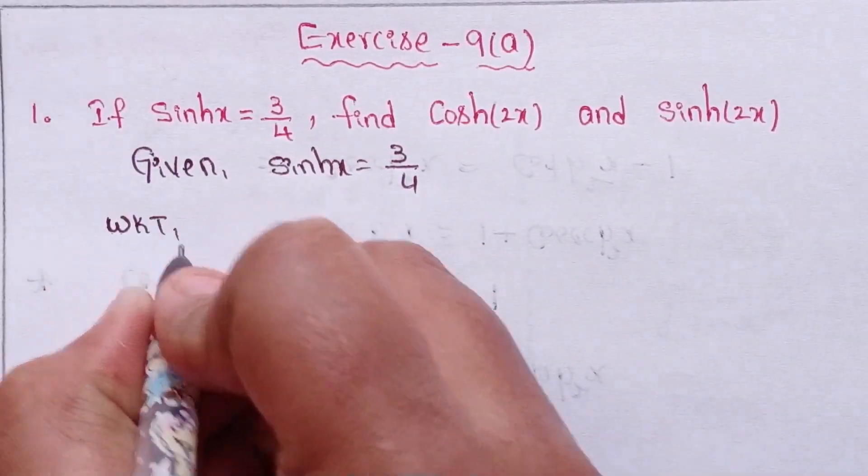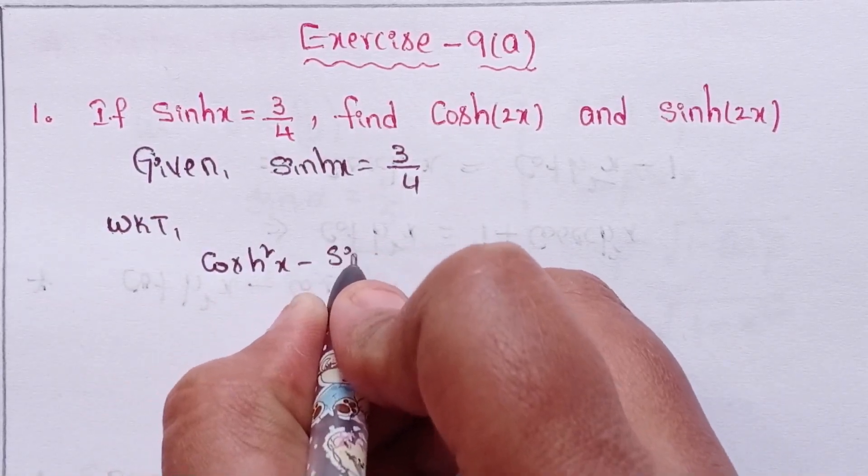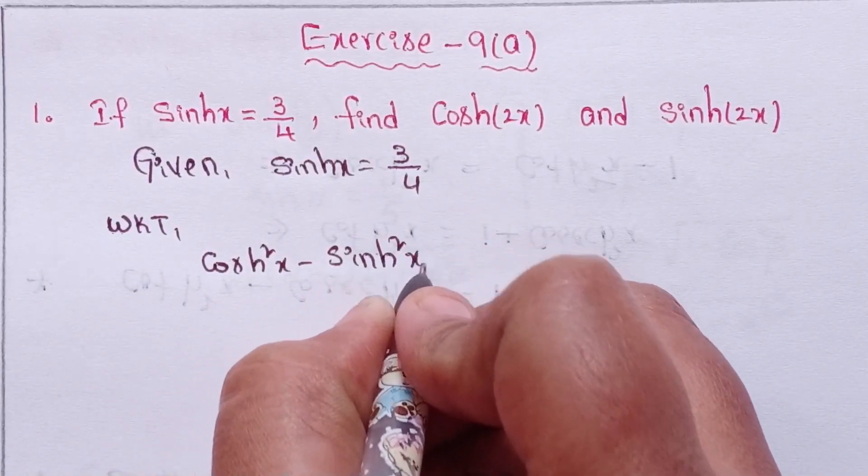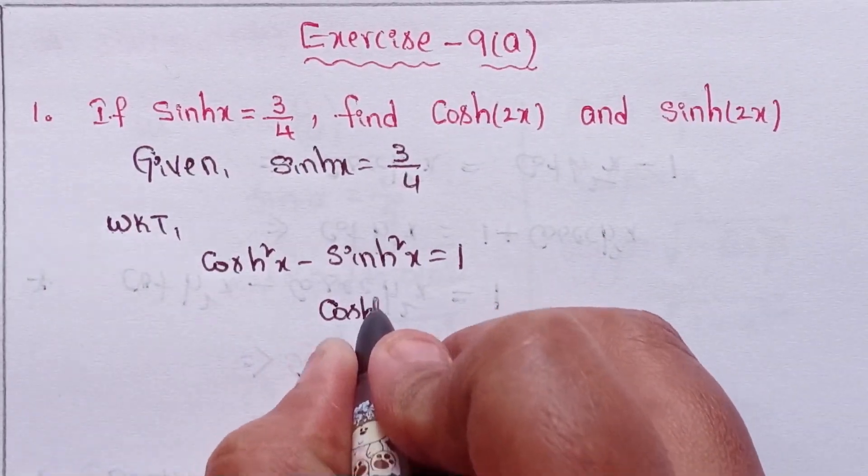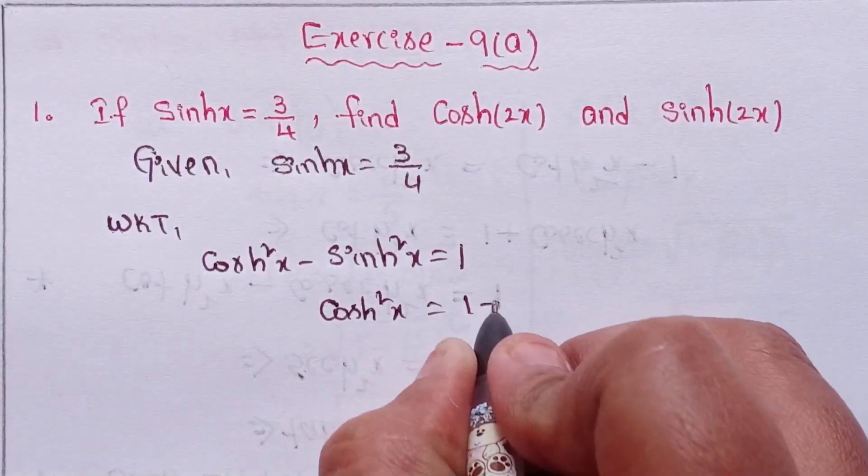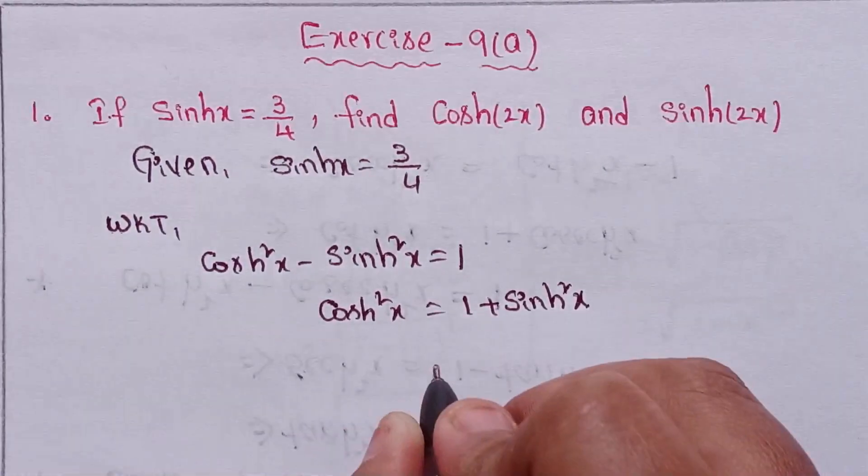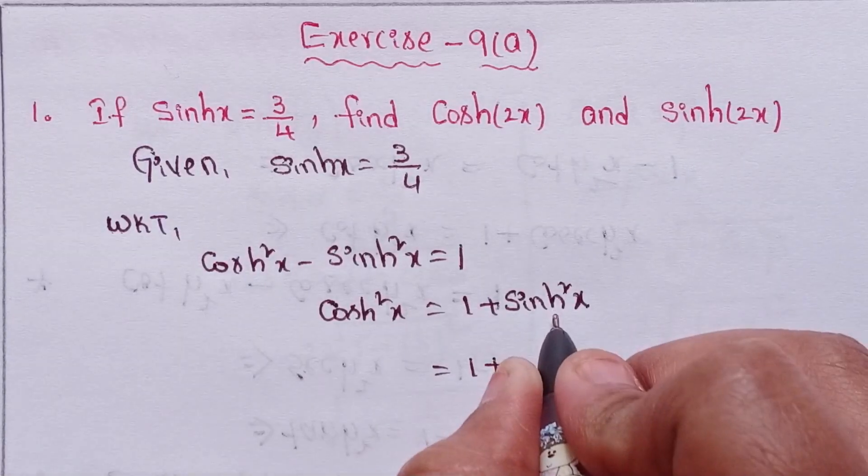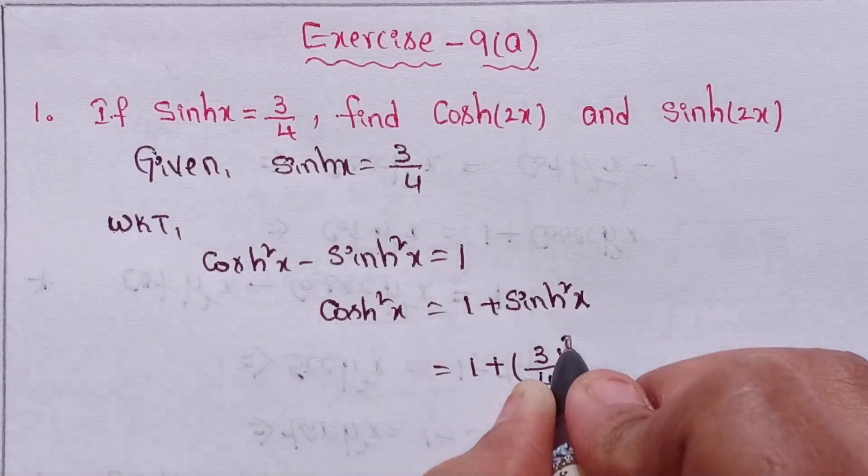We know that cosh squared x minus sinh squared x equals 1. So cosh squared x equals 1 plus sinh squared x. That is 1 plus 3 by 4 whole squared.